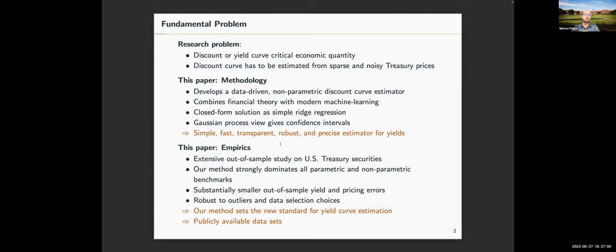This paper is about a fundamental quantity in economics and finance: the discount or yield curve. The discount curve gives you the price of a discount bond for any given maturity. We do not observe the discount curve but have to estimate it from a sparse set of noisy treasury prices. This is a methodology paper where we develop a data-driven non-parametric discount curve estimator combining financial theory with modern machine learning. We provide a closed-form solution as a simple linear kernel ridge regression.